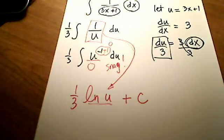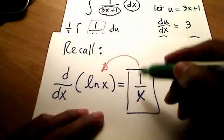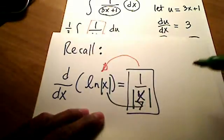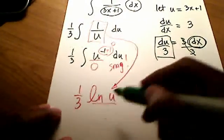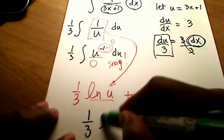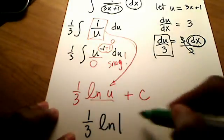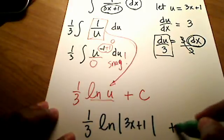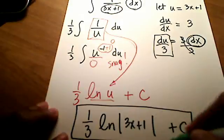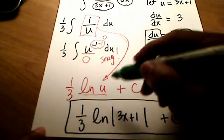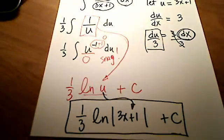Since the natural log always involves the absolute value of the argument, I'll write the final answer as: one-third times the natural log of the absolute value of 3x + 1, plus c. This is the final answer, using the absolute value notation, with 3x + 1 back-substituted in place of u.